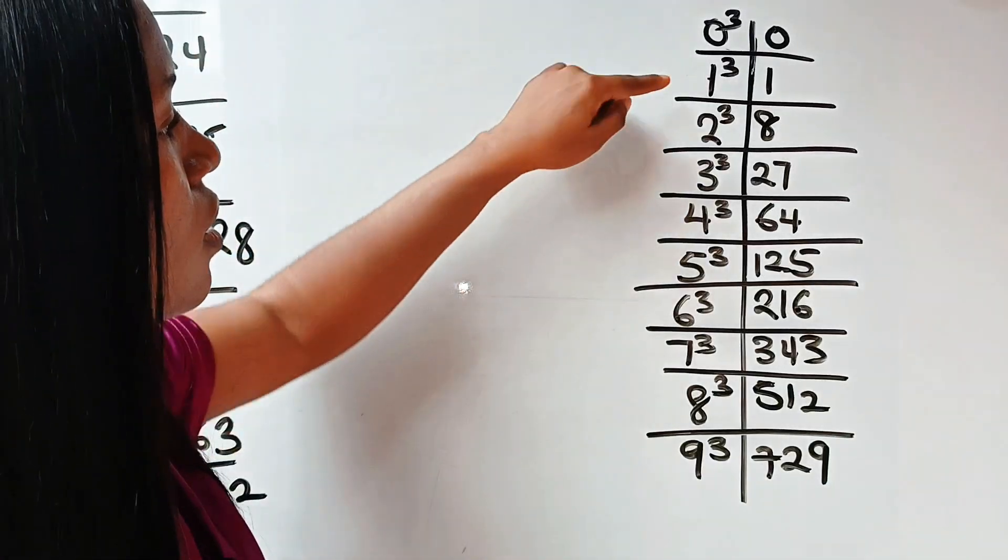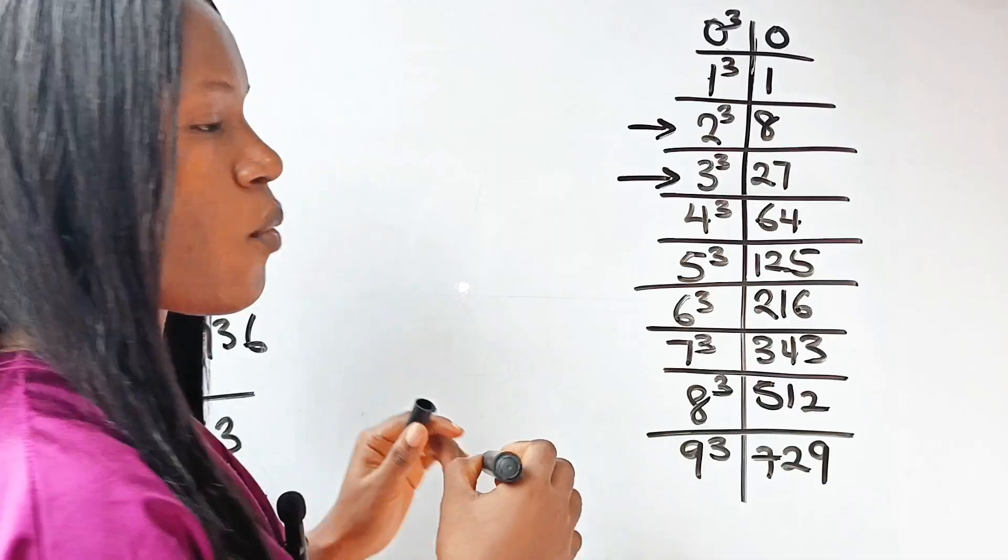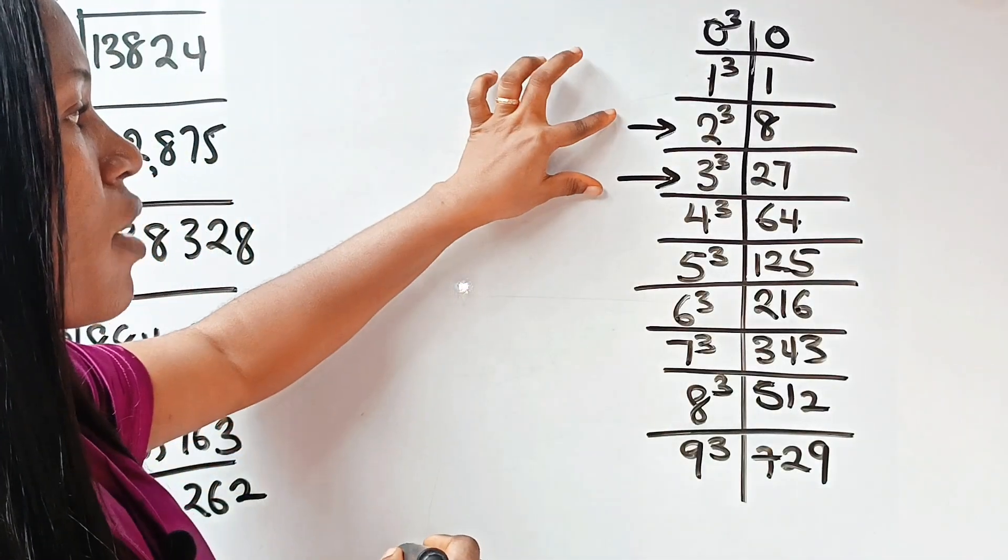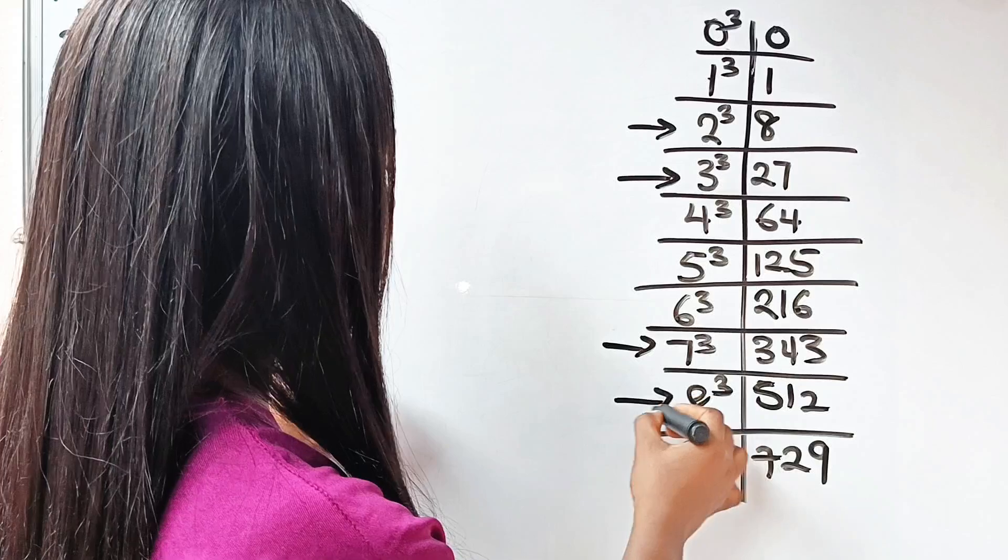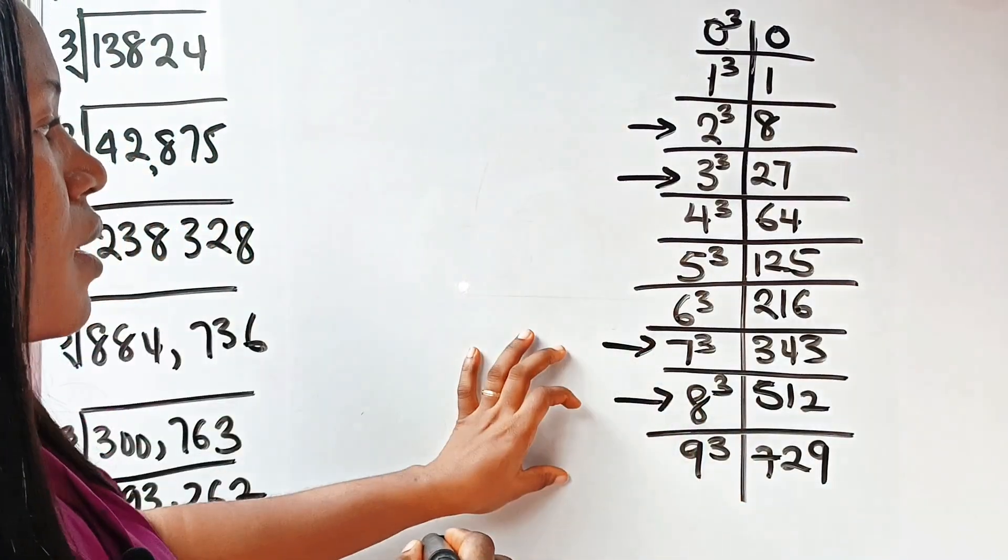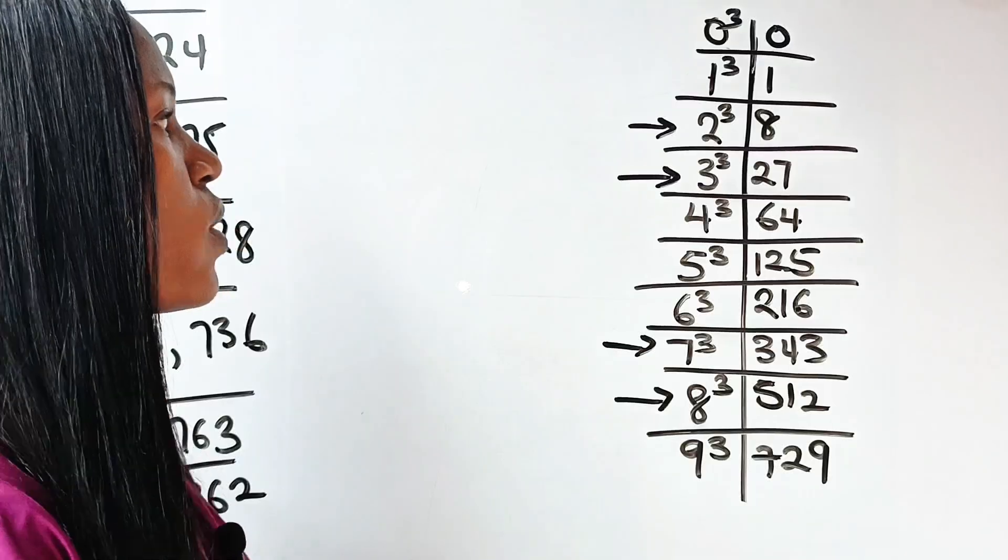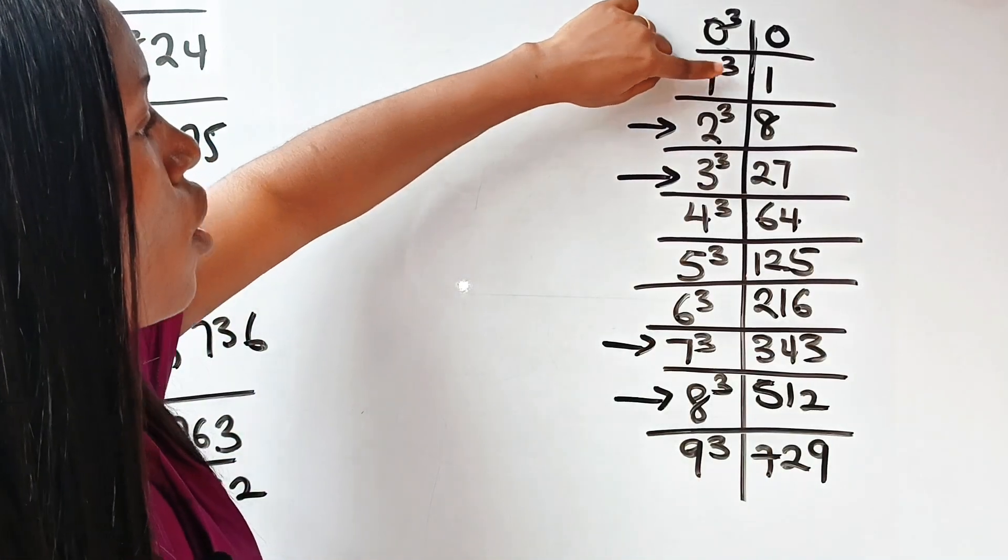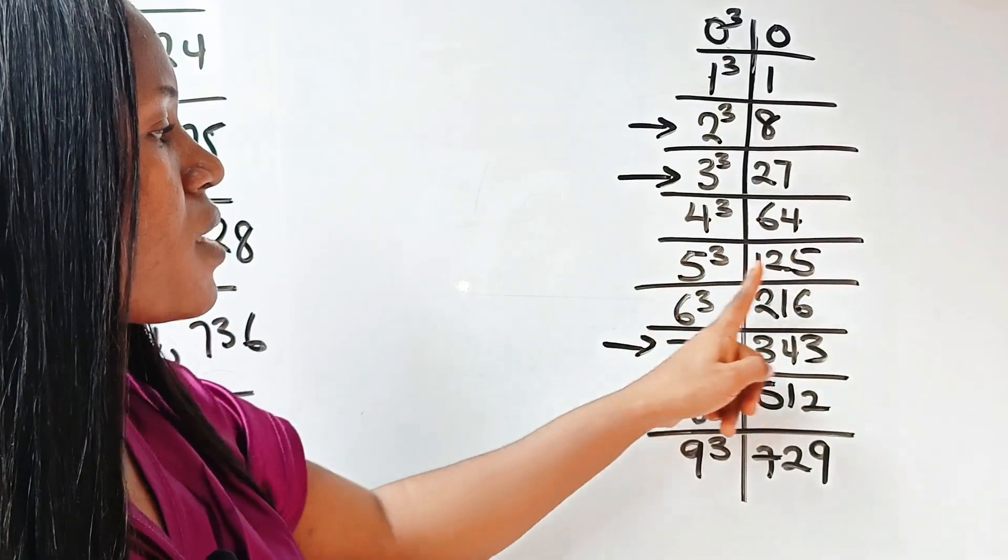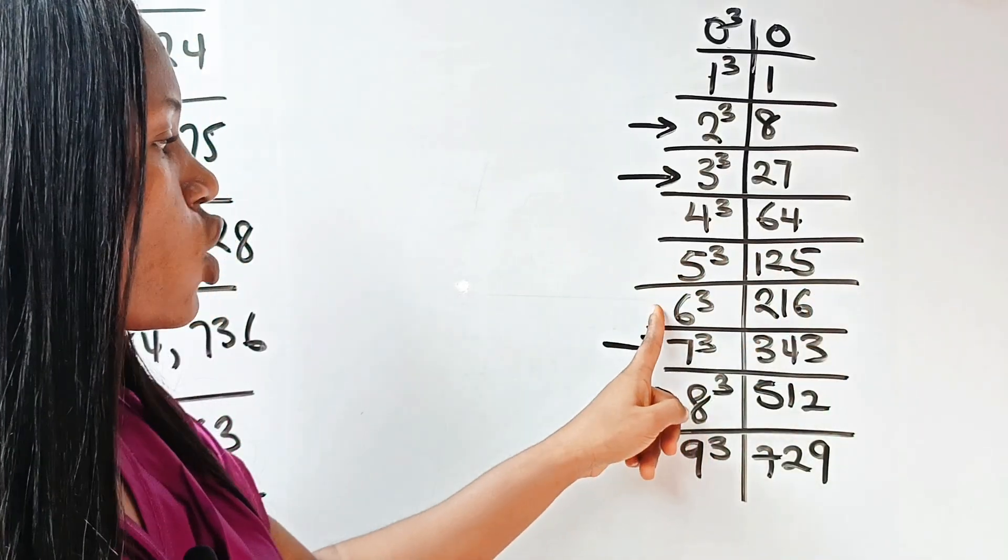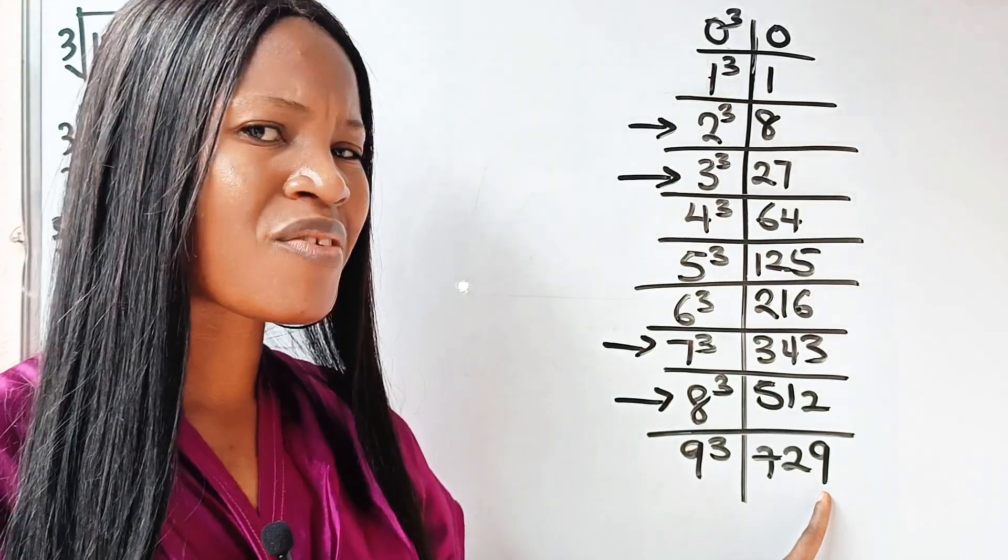Now, notice that apart from 2 and 3, I will explain later. Just remove your mind from 2 and 3 and remove your mind from 7 and 8. Apart from these 4 numbers, every other number ends with their own digits. This is what I mean. You can see that 1 cubed ends with 1, 4 cubed ends with 4, 5 cubed ends with 5, 6 cubed ends with 6, 9 cubed ends with 9. Very easy.